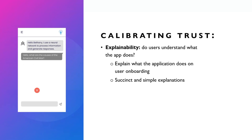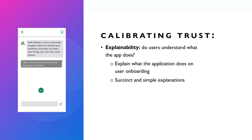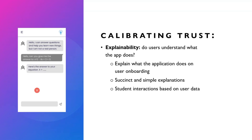Another part of explainability is ensuring your explanations are simple so anyone, regardless of background, can understand. For example, a chatbot saying 'I use a neural network to process address information and generate responses' may confuse users who don't know what a neural network is. But phrasing it as 'I am a computer program that can answer your questions and help you learn new things, but I'm not a real person' is clearer for everyone.